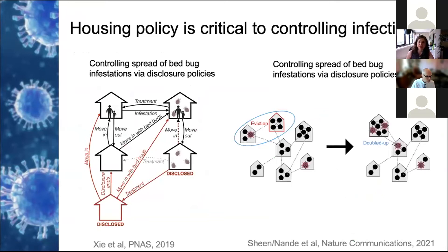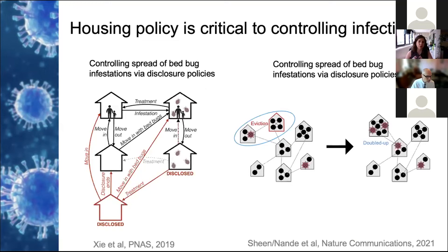Models can also help us understand how social determinants of health — for example, housing characteristics — impact infection risk and how policies might help ameliorate these risks. We've studied the spread of bed bug infestations, a neglected urban health concern that disproportionately affects certain populations. We found that the prevalence of infestations is tightly linked to the ability to employ costly pest control treatments and the turnover rate of rental units. We could show that disclosure policies — in which landlords are required to notify tenants of past infestations — could be really important in reducing bed bug spread and are cost effective even for landlords in the long term.